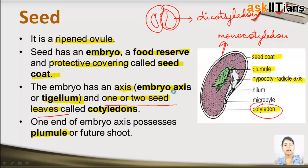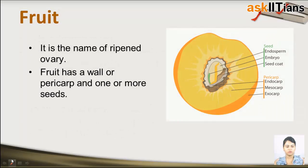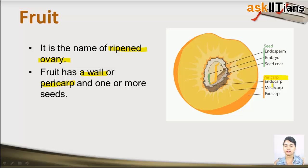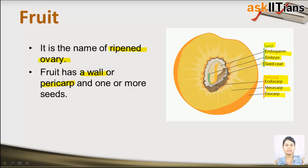Next we have fruit. A fruit is a ripened ovary. It has a wall known as the pericarp, which is divided into three parts: the endocarp, the mesocarp, and the exocarp. The fruit also contains one or more seeds inside. The seed is divided into endosperm, embryo, and seed coat, as seen in the previous slide.